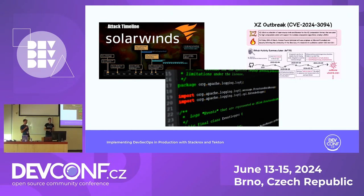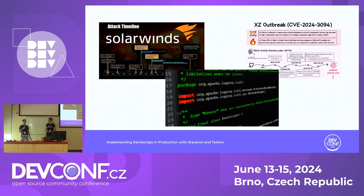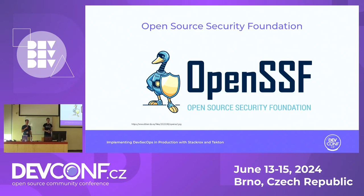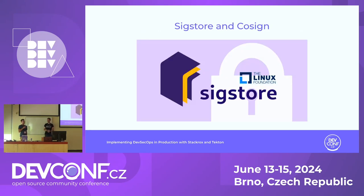We've collected some examples of supply chain attacks from recent months — SolarWinds, Log4j, and XZ — all quite popular in the media. As a result, the Open Source Security Foundation was founded to implement tools that help defend against these kinds of attacks. The OpenSSF created a tool called Sigstore, which was afterwards donated to the Linux Foundation.